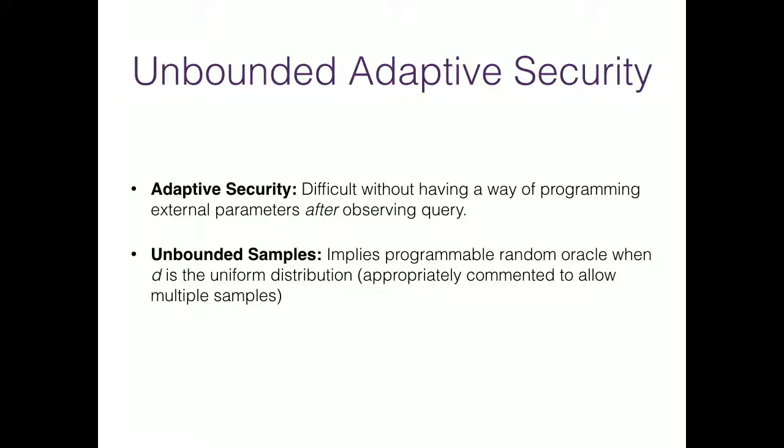In the adaptive setting, it is difficult to obtain security without a way to observe the adversary's queries and program in external parameters accordingly. Moreover, if we want an unbounded number of samples, in an extreme case this implies a programmable random oracle — one could set D to be the uniform distribution and try to obtain multiple uniformly distributed samples, which by our security definition should be indistinguishable from external samples for an unbounded number of such samples. Thus we are left with no option but to work in the observable programmable random oracle model.